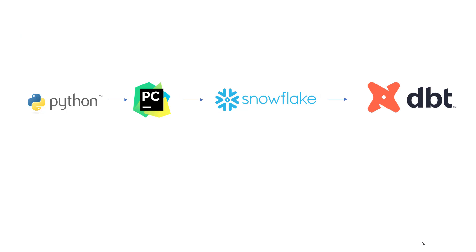A few things you have to take care of when working with dbt: first we'll install Python, then we'll install our favorite IDE — I'm opting for PyCharm. Then we'll install Snowflake. As you know, dbt is just a transformation tool, it needs some database or warehouse to work with. We're choosing Snowflake because it has a very good trial period of 30 days and you don't have to set up any database on your local machine.